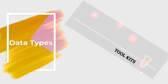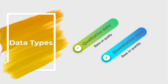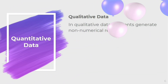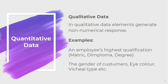Now we learn different types of data. Data can be classified either as qualitative or quantitative. In qualitative data, elements generate non-numeric responses. For example, an employee's highest qualification is a non-numeric response. Similarly, the gender of a customer, eye color, vehicle type, etc. are different examples of qualitative data.